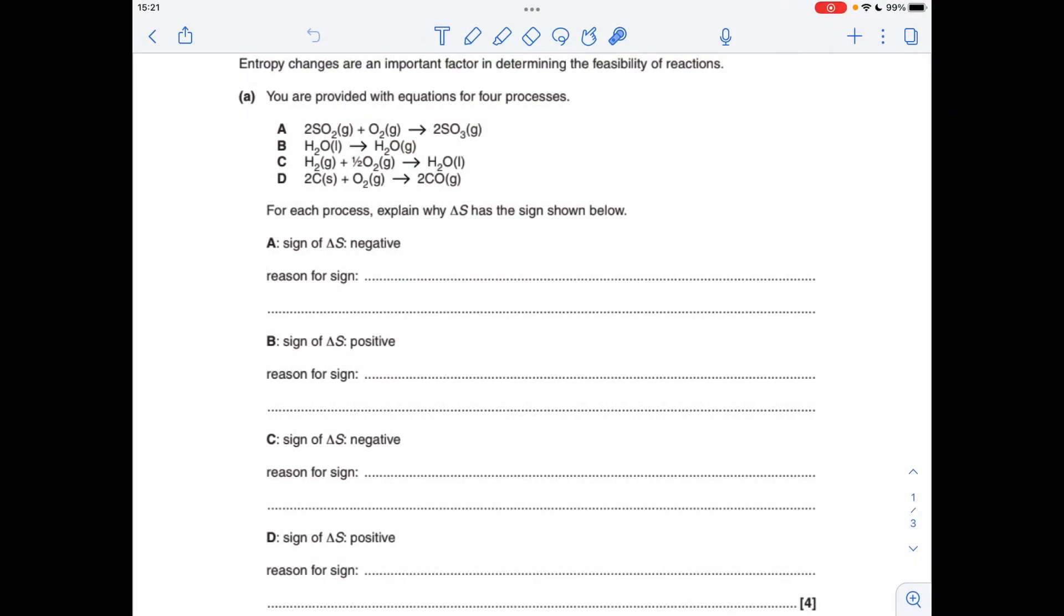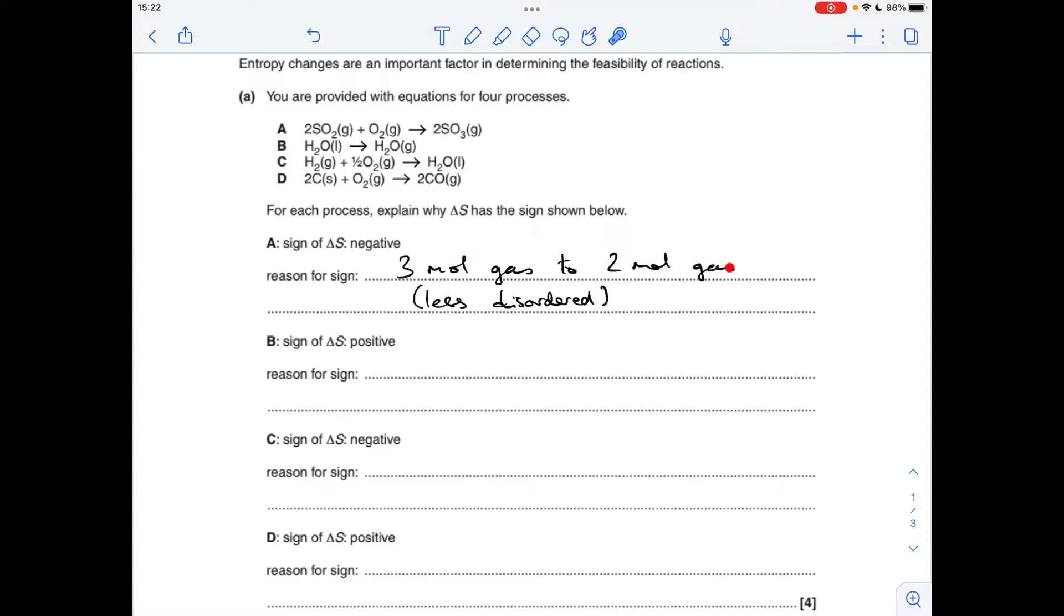For part A, we've got these four reactions A through D, and we're told the delta S sign for each of them. We've just got to justify the sign. In the first one, the delta S is negative, so it's getting less disordered. Why is that? It's because you're going from three moles of gas down to two moles of gas. In the mark scheme, all you had to say was something like that. It's getting less disordered because you've got fewer moles of gas on the product side.